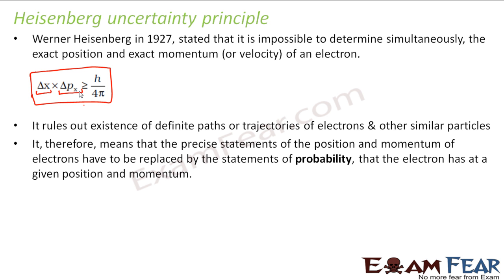It therefore means that precise statements of the position and momentum of electrons have to be replaced by statements of probability. We can never say that electrons will move in this circular path and the electron's position at this point is this. Every time we have to use the word probability — that means there is a probability that the electron might be at this position.